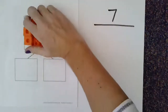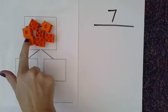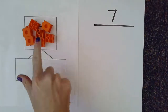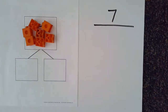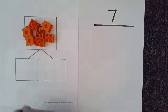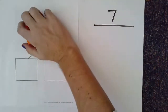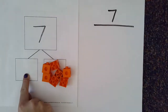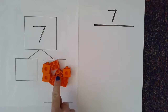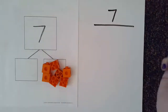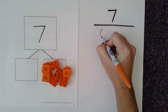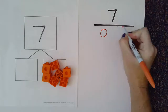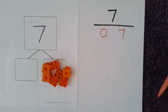We're going to start with seven cubes — one, two, three, four, five, six, seven — in order to find my number partners for seven. The first thing I'm going to do is take all seven of my cubes and leave nothing in the other part, because I know that zero and seven together make seven. So my first number partner is zero and seven.